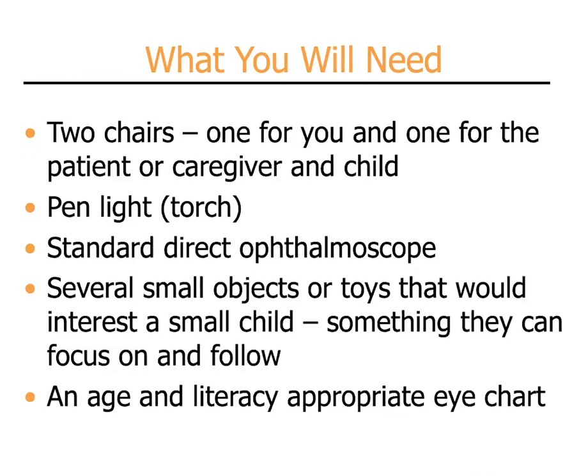In general, when using an examination room, you will need two chairs: one for you and one for the patient or caregiver and child. It is helpful to have a small light source such as a pen light or small torch, a standard direct ophthalmoscope either battery powered or rechargeable, and small objects of interest that the child will either look at and focus on, or can track as you move them around. Always keep in mind when testing visual acuity that you want to use an eye chart which is age and literacy appropriate.